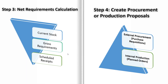Next, net requirements calculation. Once the planning file is updated, SAP performs a net requirements calculation, which compares available inventory and supply with the demand for materials. Key components include: current stock — the material currently available in the warehouse; scheduled receipts — quantities expected to arrive from suppliers or internal production; and gross requirements — the total amount of materials needed for production or sales. The net requirements are calculated by subtracting available stock from gross requirements. If the result is positive, meaning there is a shortage, SAP determines how much material needs to be ordered or produced.